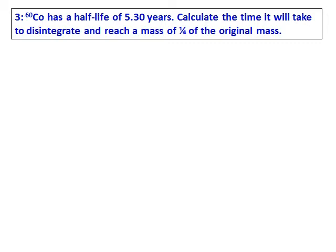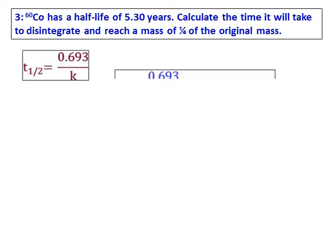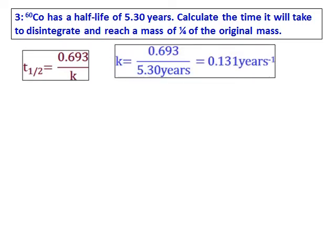Cobalt-60 has a half-life of 5.30 years. Calculate the time it will take to disintegrate and reach a mass of one-fourth of the original mass. As usual, the first step is to calculate the half-life. From the half-life, calculate the value of k.